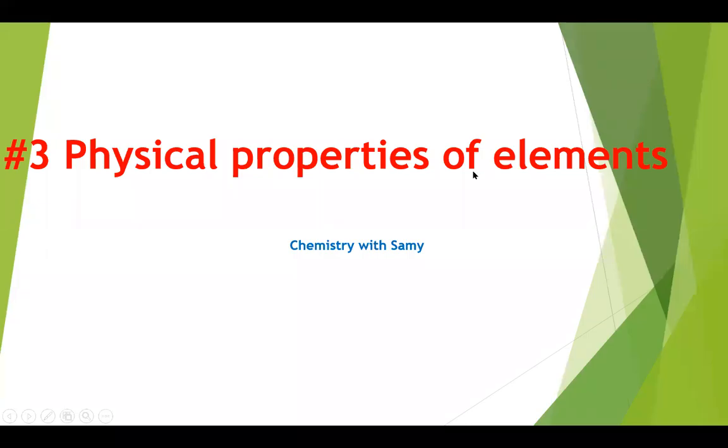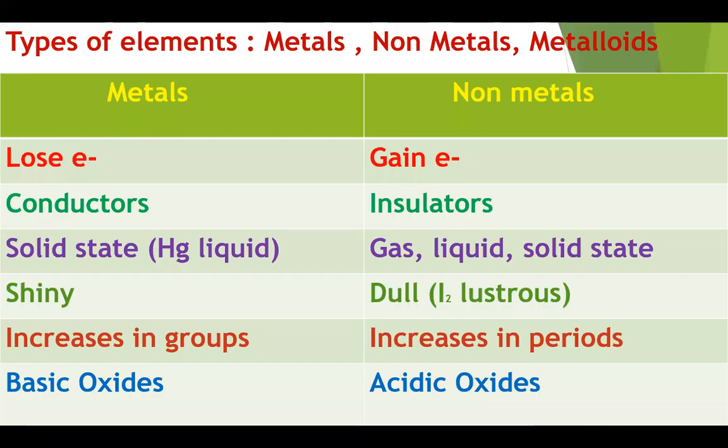Hi everyone. Today we are going to discuss very important physical properties of elements — that is the types of elements. Depending on the types of elements in the periodic table, there are three types: metals, nonmetals, and metalloids.